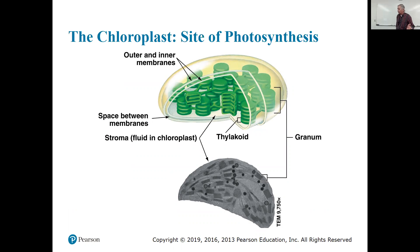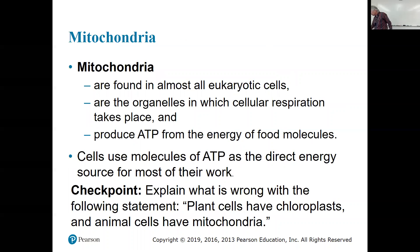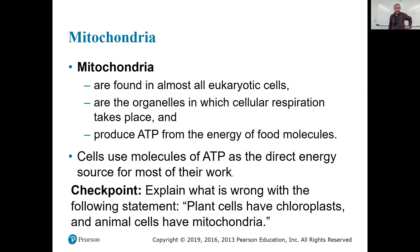Chloroplasts have inner and outer membranes — a double membrane — and it's got a thylakoid membrane system. A stack of these thylakoid membranes forms a granum. Mitochondria are found in almost all eukaryotic cells — in fact every eukaryotic cell, except one protist that's actually a sexually transmitted disease called Chlamydia, which doesn't have mitochondria. When it infects you, it uses your mitochondria to make its ATP.